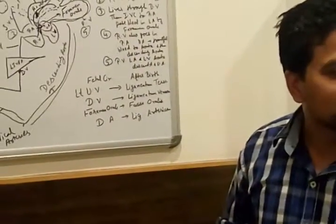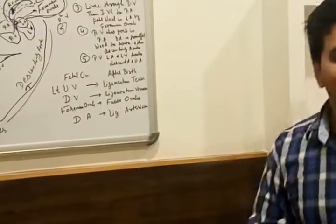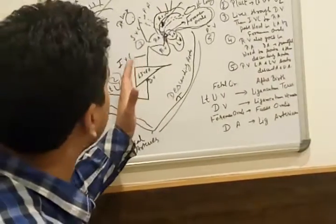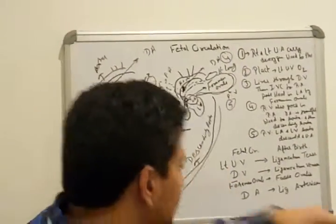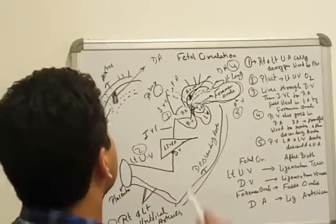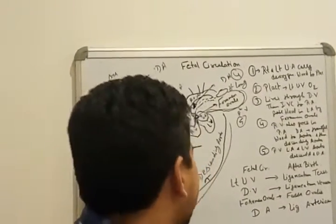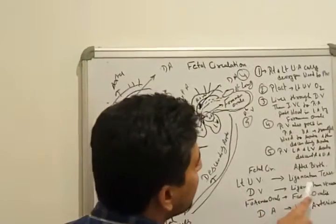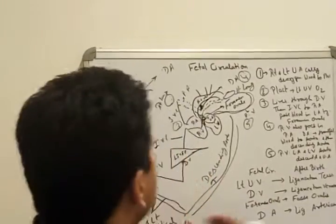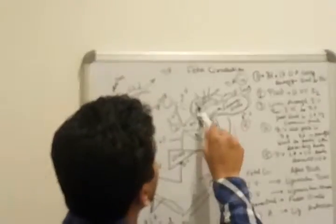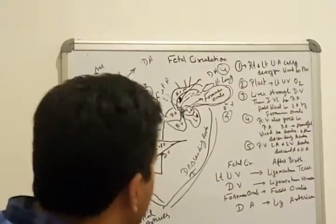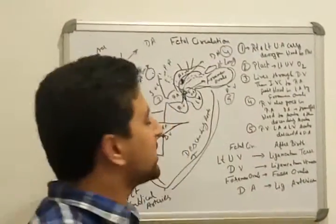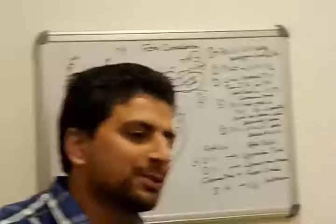How does the circulation change after birth? I already explained: the left umbilical vein after fetal circulation, after birth, remains as ligamentum teres. Ductus venosus changes into ligamentum venosum. Foramen ovale changes into fossa ovalis. Ductus arteriosus after birth remains as ligamentum arteriosum. That's all, my dear friends.